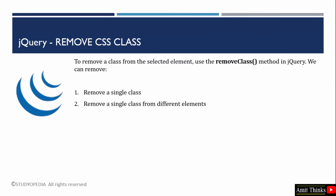To remove a CSS class from the selected element, use the removeClass method. This is a built-in method provided by jQuery. We will first see how to remove a single class. In the second example, we will see how to remove a single class from different HTML elements on a web page.